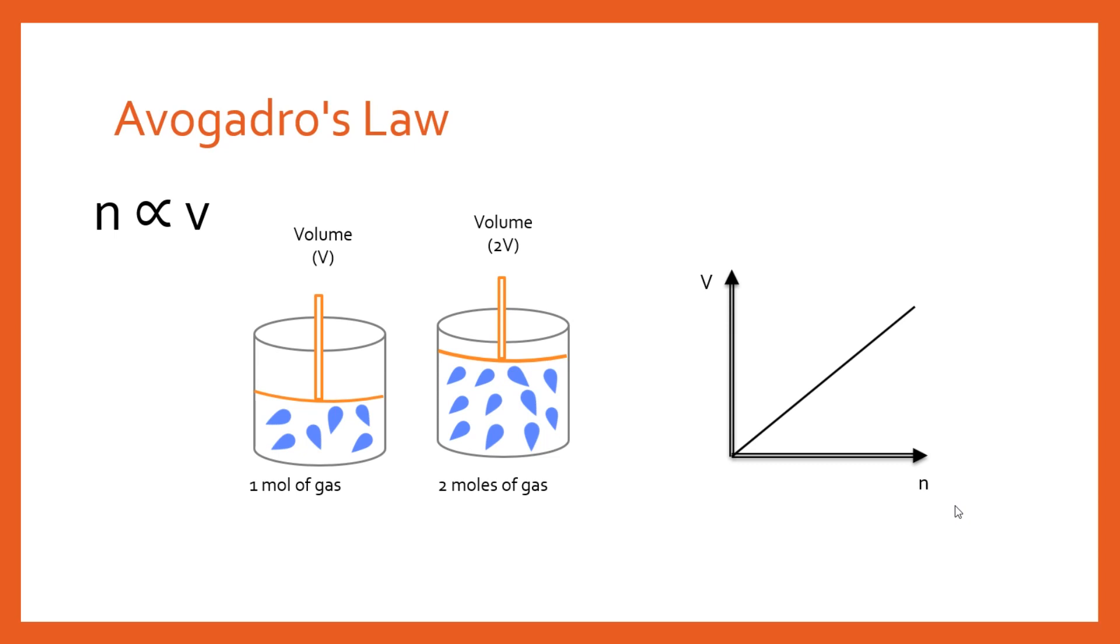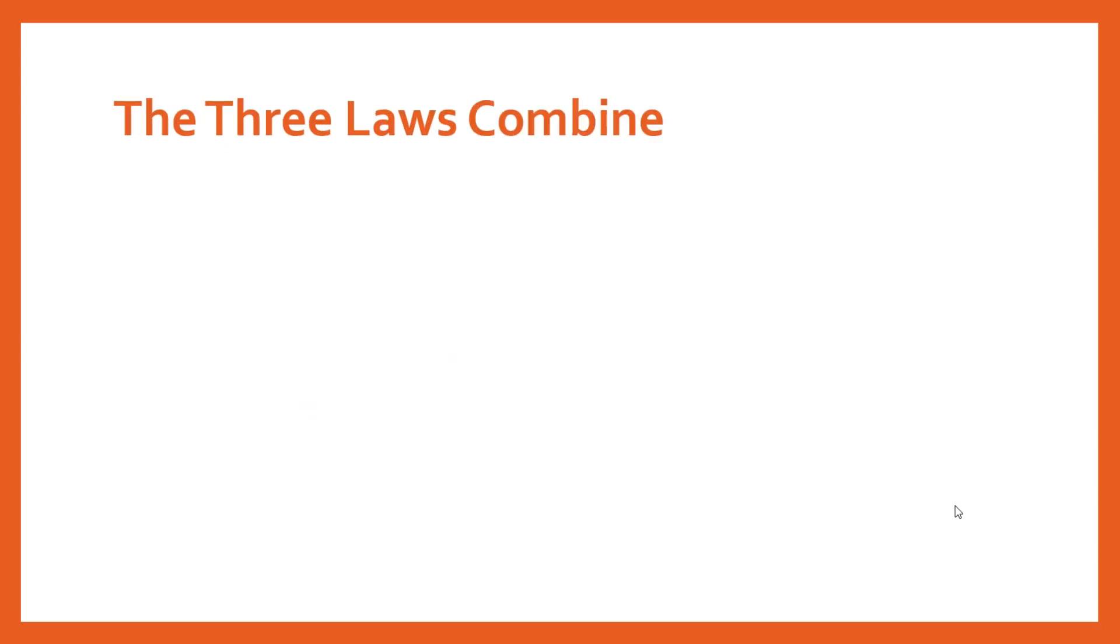We can actually put these three relationships together, and something interesting will happen. So we've got the three laws: Boyle's law, Charles' law, and Avogadro's law. And if we combine all of these together, we can show that volume is directly proportional to n times T over P. You see, we've got volume is directly proportional to n. Then we've got the T here, that's giving us nT. And then we've got the P, which is going on the bottom there.